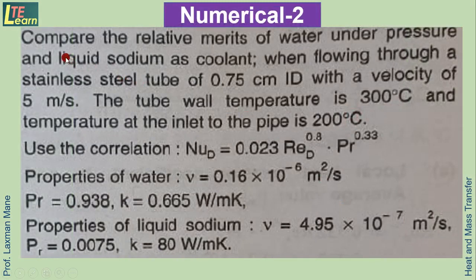Next numerical: compare the relative merits of water under pressure and liquid sodium as coolants when flowing through a stainless steel tube of 0.75 cm inner diameter with a velocity of 5 m/s. The tube wall temperature is 300°C and the inlet pipe temperature is 200°C.